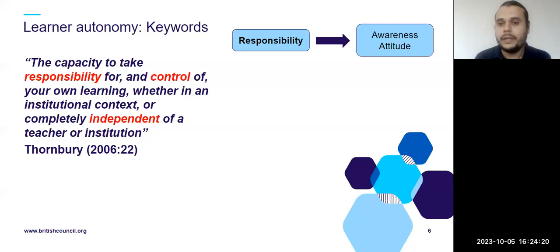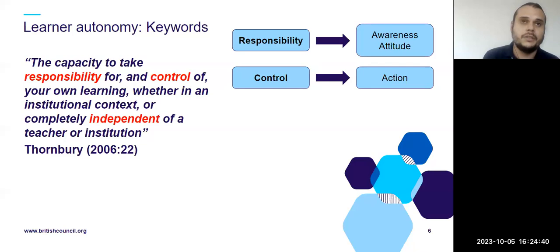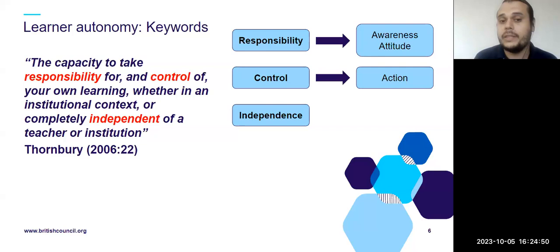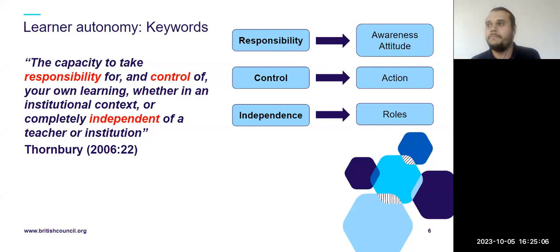If autonomous learners are responsible, they are aware of their own learning process — they know what they like, their strengths and weaknesses, and they work upon them with the right attitude. If they can take control, they can take actions and initiative beyond just listening to the teacher. If they achieve independence, they can take different active roles — not just listeners. They can be leaders, feedbackers, monitors; they can choose what to learn and how to learn it.